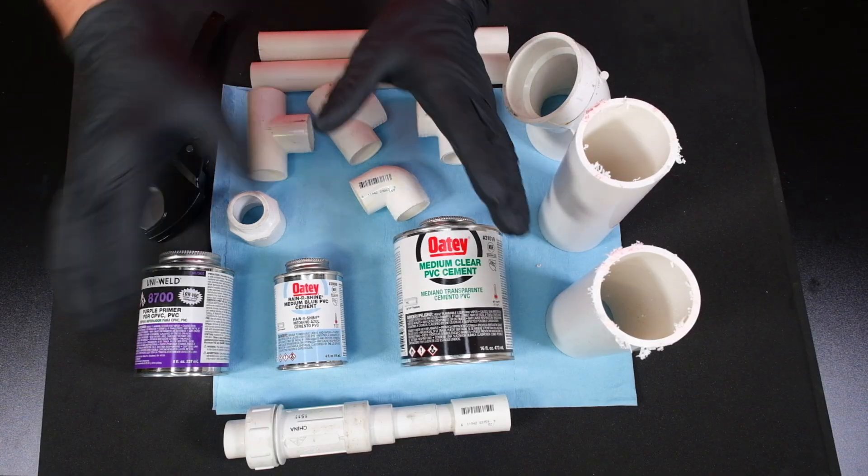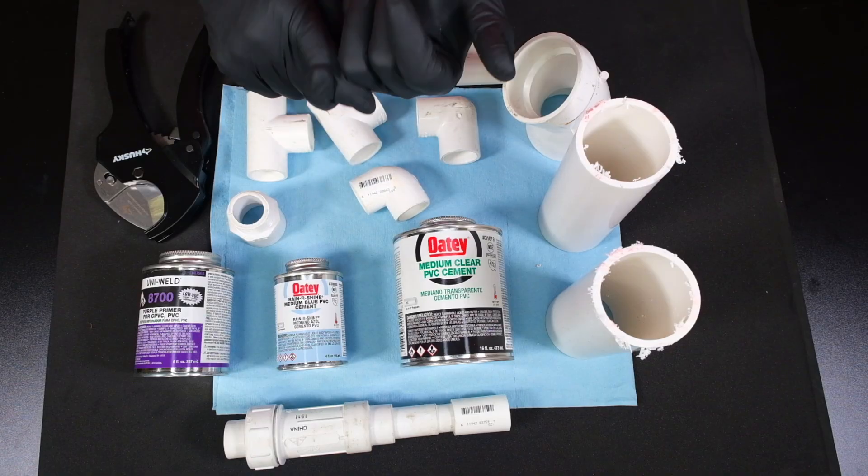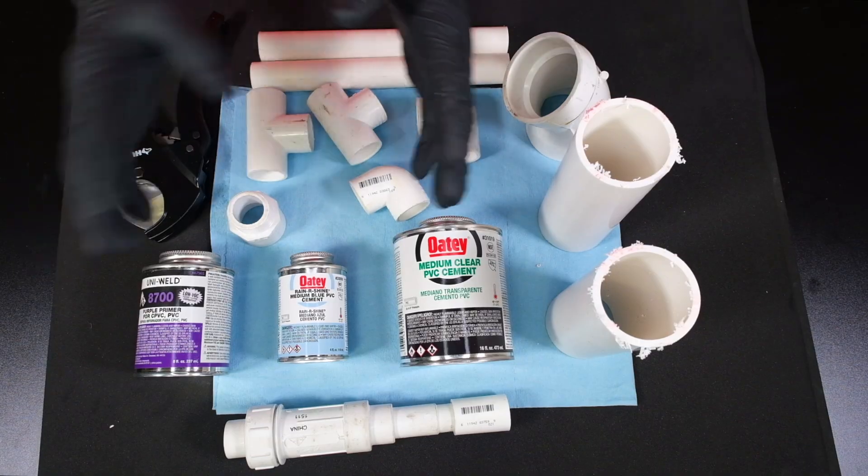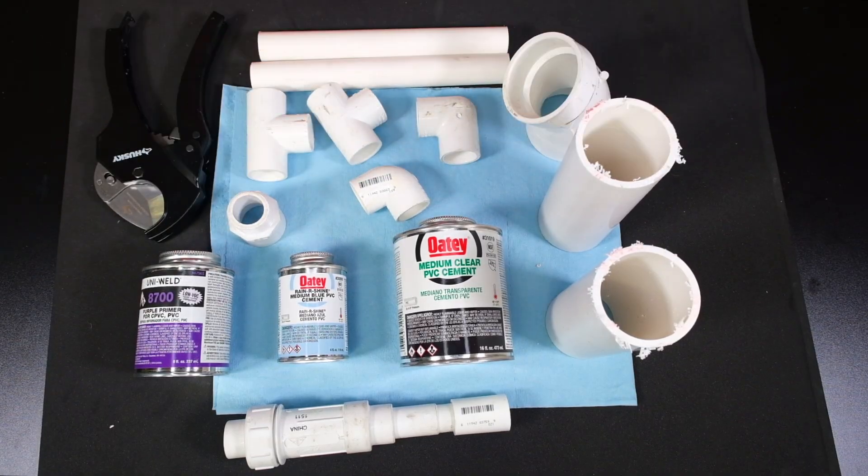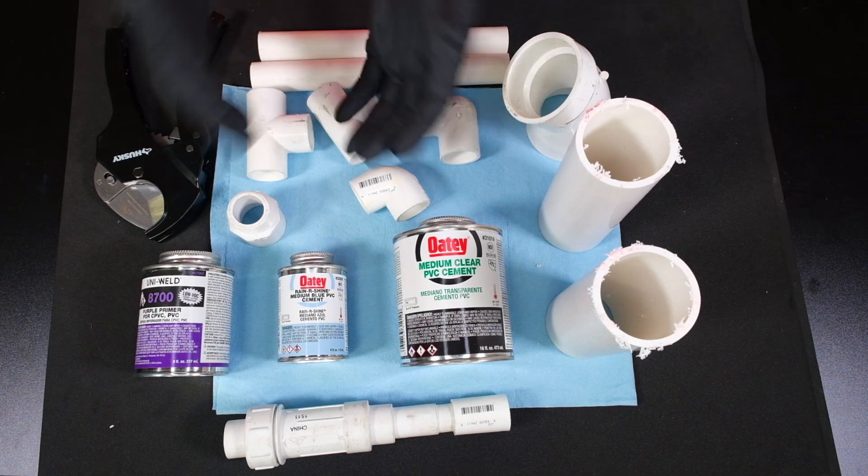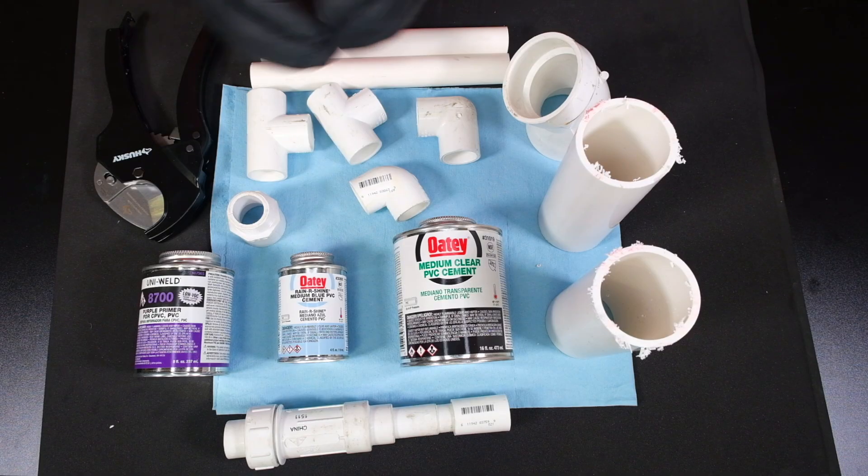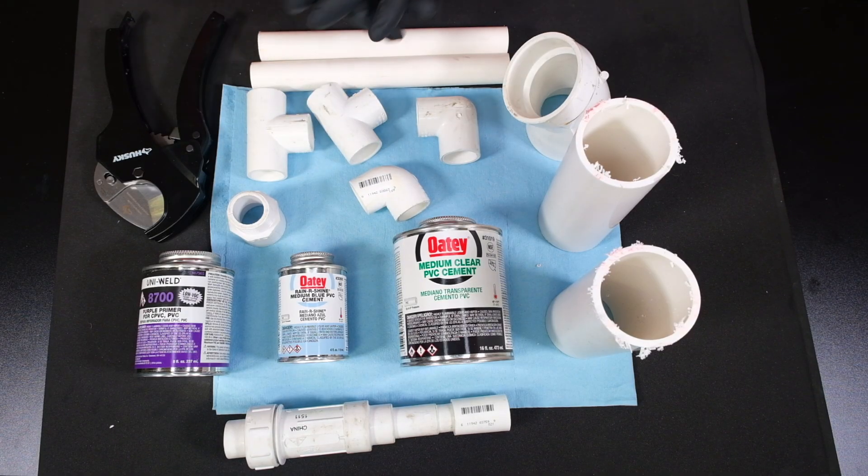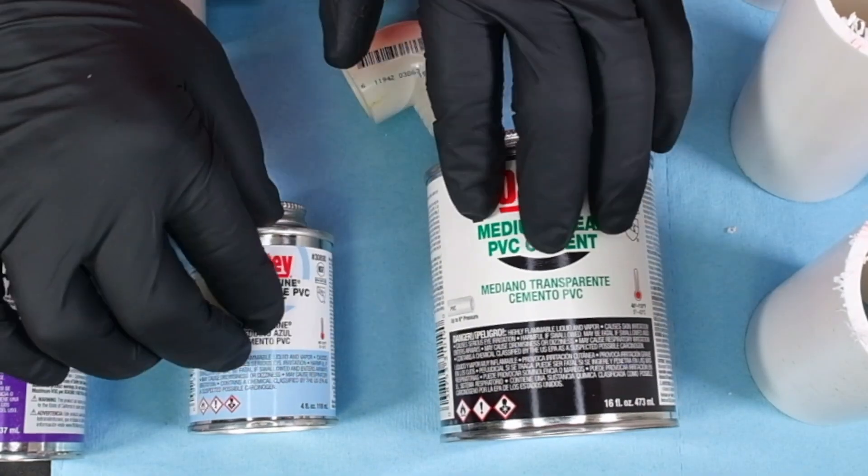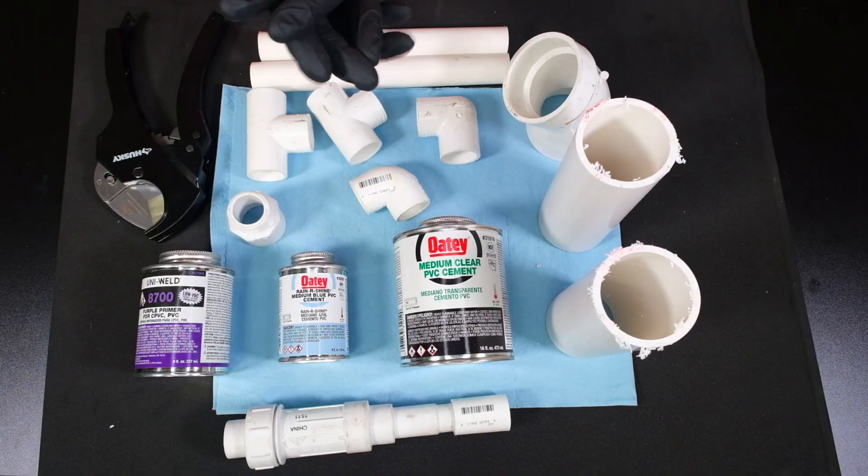And the thing we have to worry about here is a lot of things come into play. How hot it is outside. How humid it is outside. If you're down in a hole where you're dealing with a lot of moisture because the ground's been saturated by a leaking faucet or pipe. All of these things come into play. You need to make sure you have a good dry glue joint that you're putting together. No water running through it. You need to figure out a way to get the water to stop.